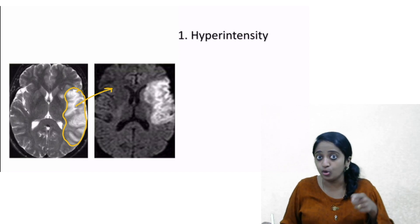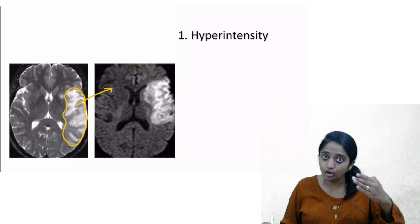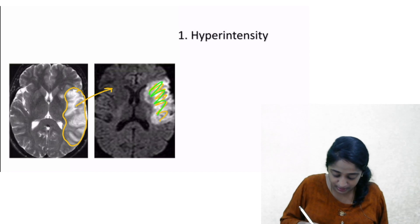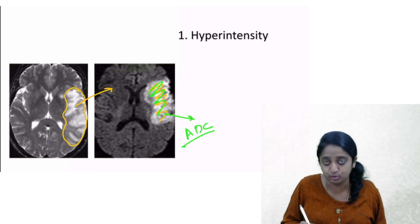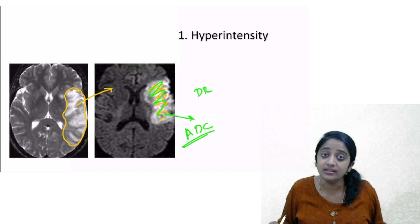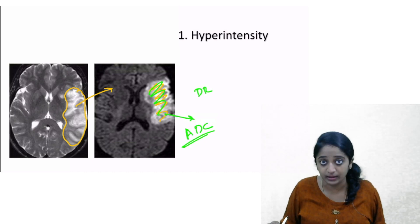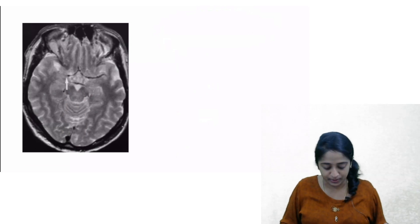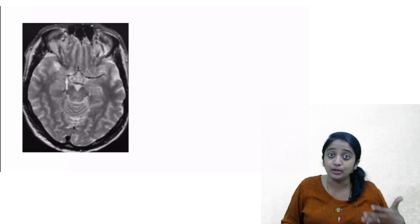Always correlate with diffusion-weighted sequences as well, since you will acquire diffusion anyway. There is a corresponding diffusion restriction. Whenever interpreting diffusion-weighted imaging, also check the ADC map. So with diffusion restriction plus T2 hyperintensity in the appropriate clinical setting, we call it acute infarct. T2-weighted imaging is essentially the counterpart of FLAIR — the basic difference is that in FLAIR, the fluid signal is suppressed. Whatever you expect in FLAIR, you expect the same in T2: hyperintensity.